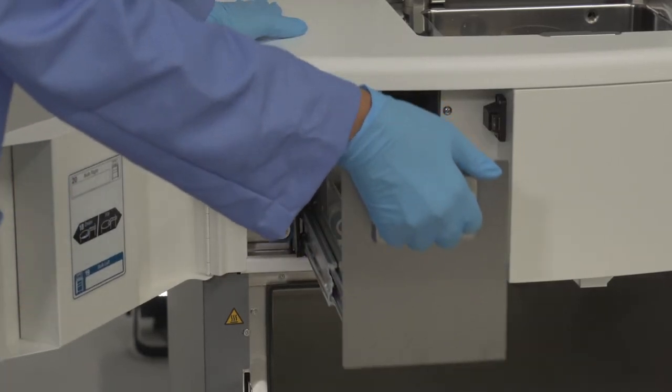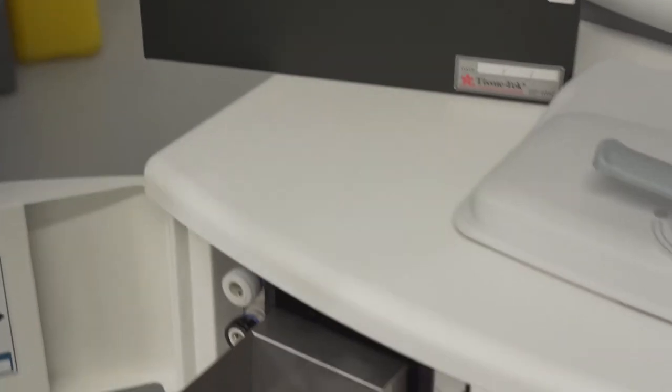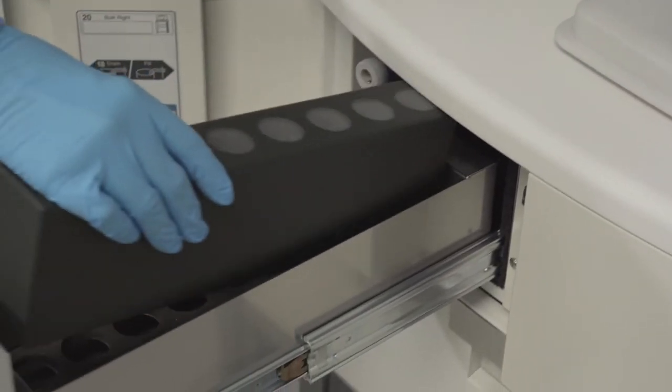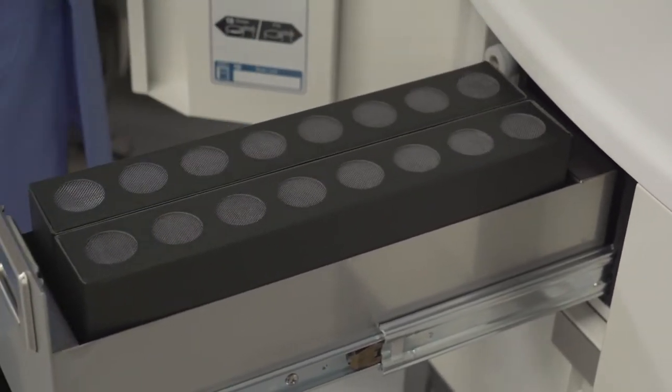The fume control system located here on the side of the processor contains two activated carbon filters that absorb fumes from the retort and oven compartments. We recommend that the filters be replaced monthly.